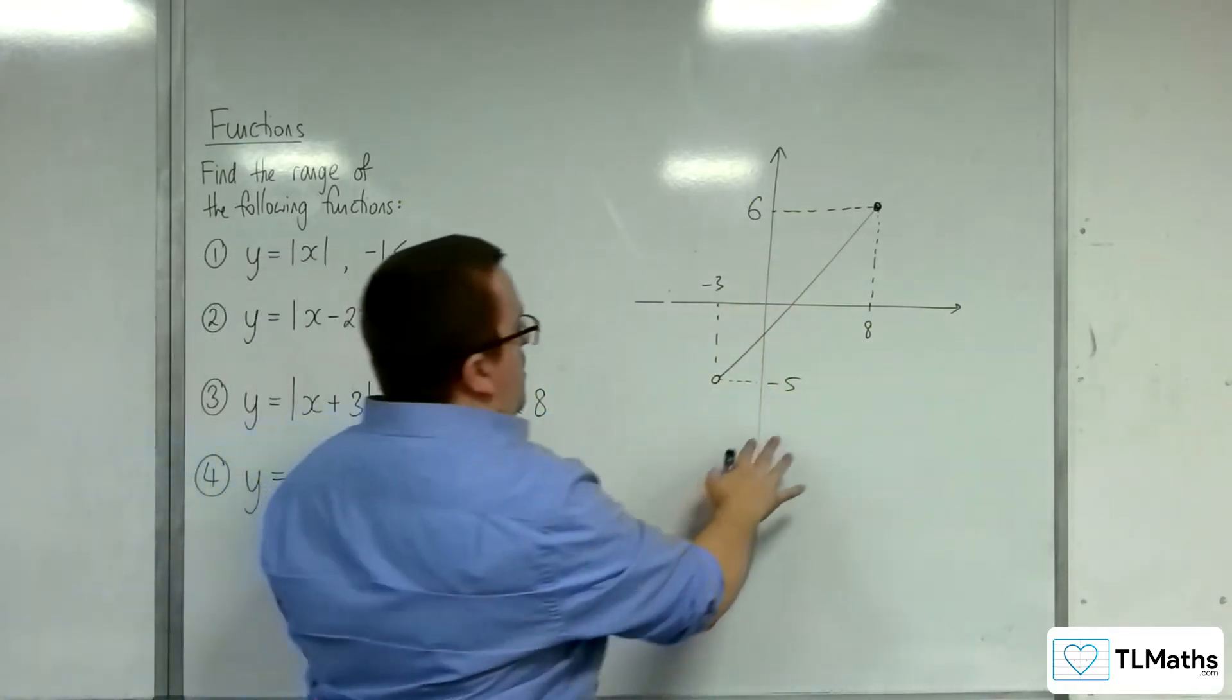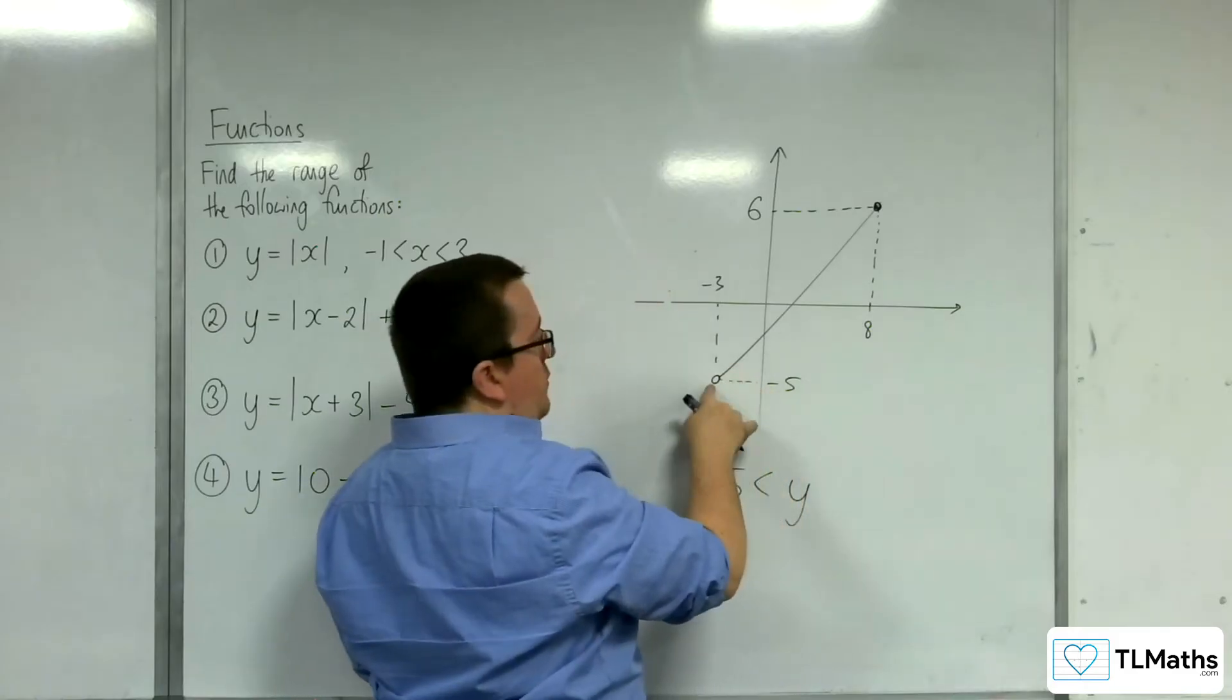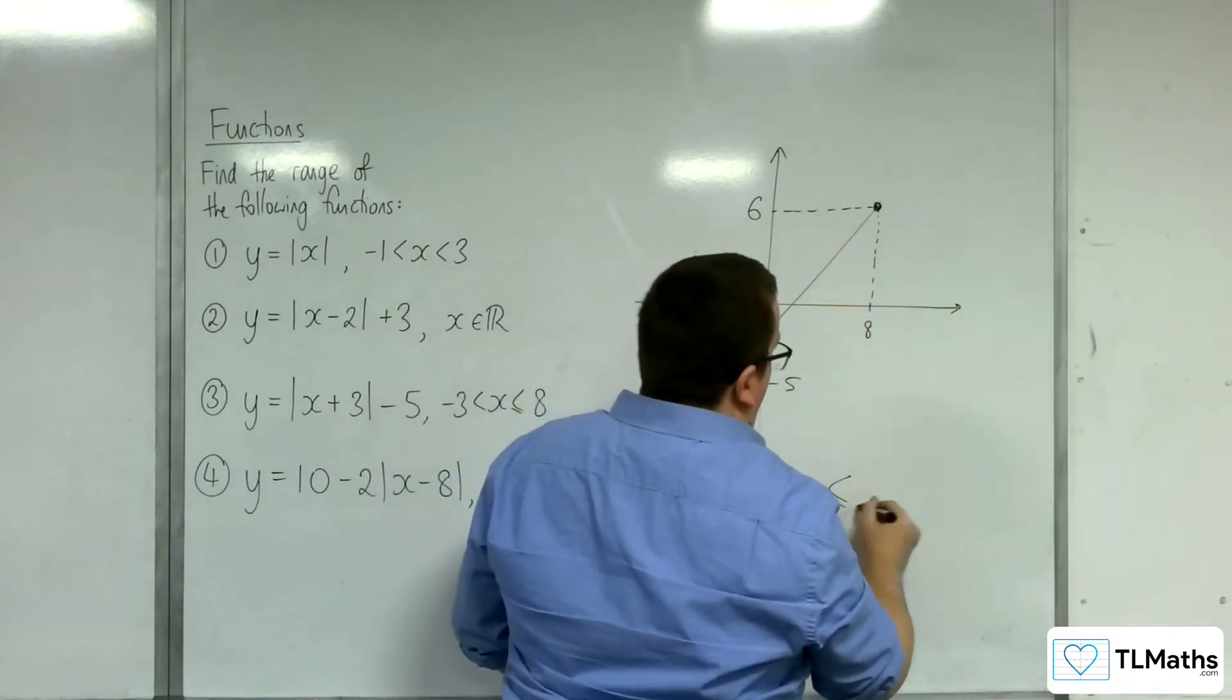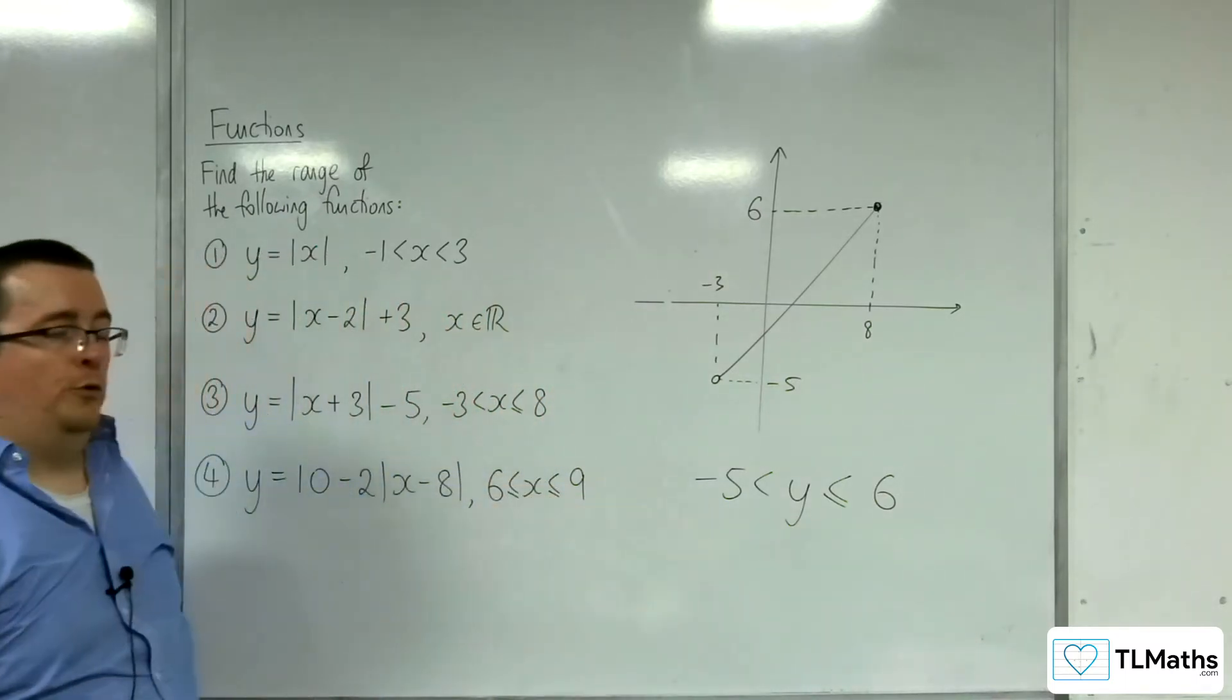So we're going from minus 5, so greater than minus 5, not including it, all the way up to 6, and we're including that. So this is the range for number 3.